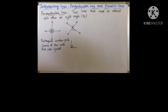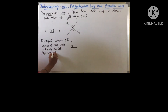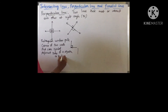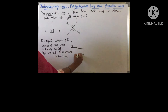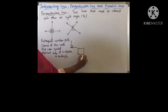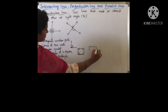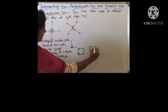Examples of perpendicular lines are the adjacent sides of a square or rectangle. In a square, all four sides are equal. If you see, this side and this side are adjacent, and here it is 90 degrees. In a square and rectangle, all four angles are 90 degrees.